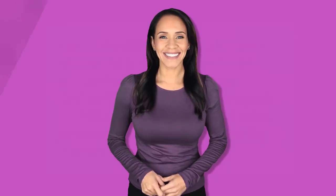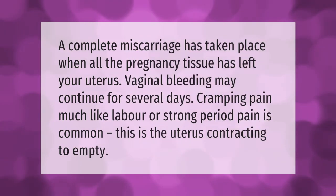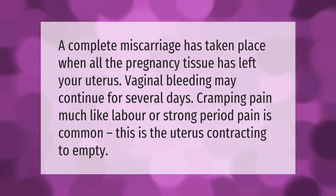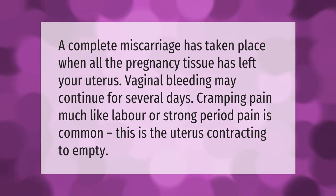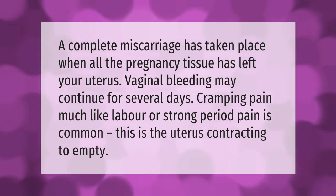A complete miscarriage has taken place when all the pregnancy tissue has left your uterus. Vaginal bleeding may continue for several days. Cramping pain, much like labor or strong period pain, is common — this is the uterus contracting to empty.